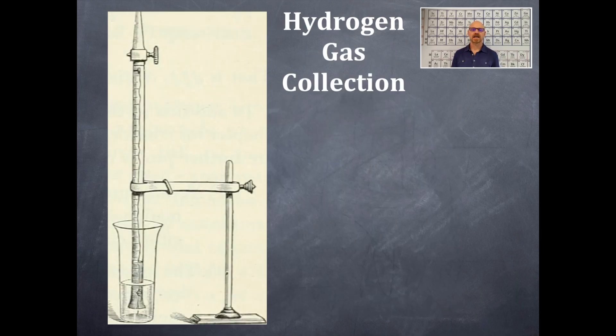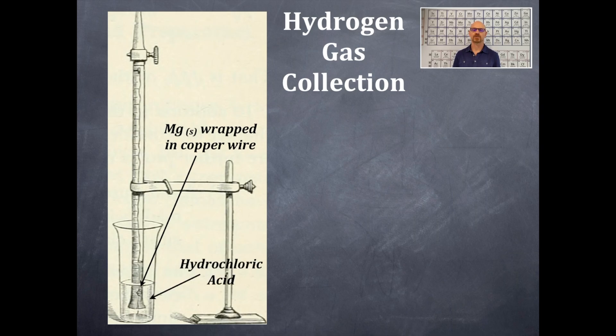Number three is a gas collection of hydrogen gas also, and this is magnesium solid wrapped in a copper wire. You're going to take a eudiometer tube and flip it, invert it, and you have hydrochloric acid inside that eudiometer tube originally. That's going to also have hydrogen gas collected at the top.